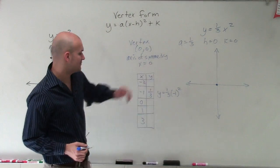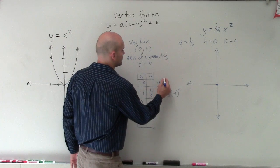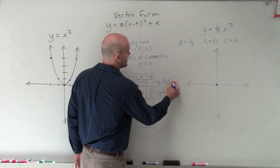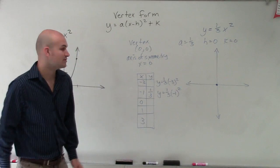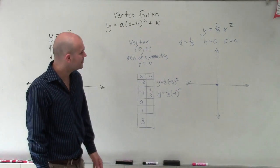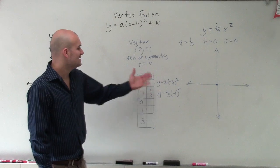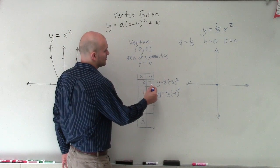Then let's go and do negative 3. So y equals 1/3 times negative 3 squared. Well, negative 3 squared is going to be 9. 9 times 1/3 is going to be 3.